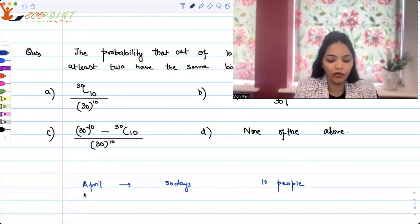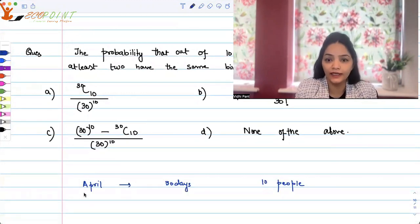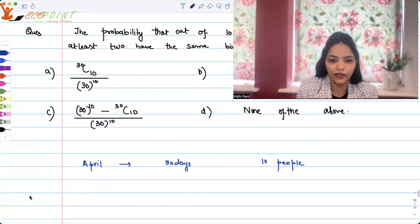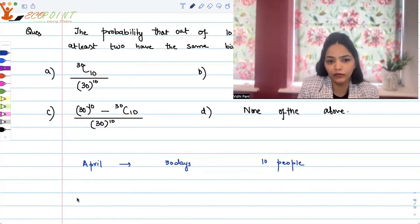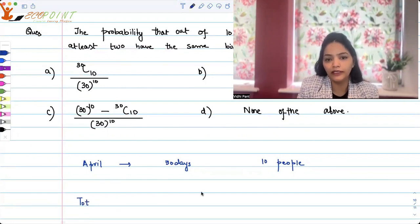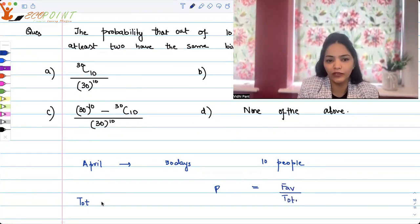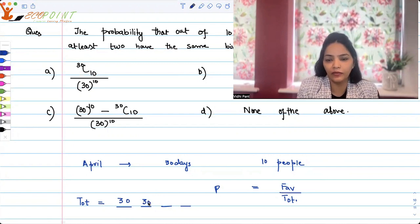Which means that if I talk about the options that these 10 people have, probability is basically favorable cases upon the total cases. So if I talk about total cases, how many total cases do I have? Each of the 10 people have 30 days in which we can have our birthdays. If we are in a classroom and we are 10 of us, all of us have birthdays in April.